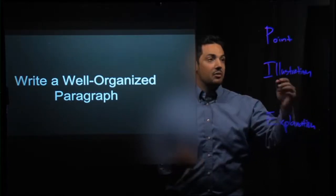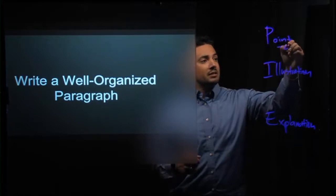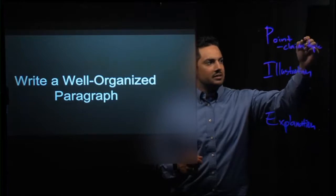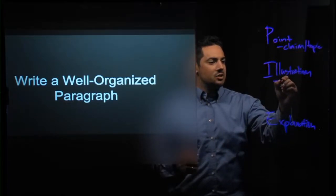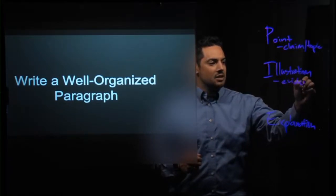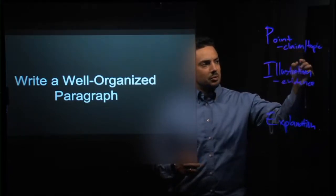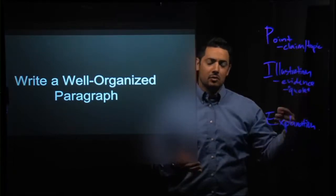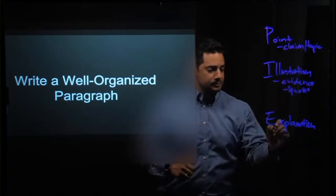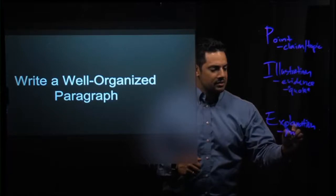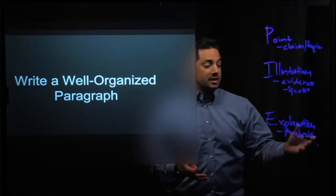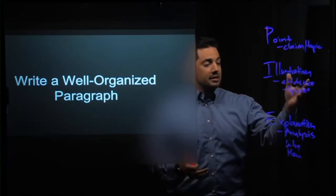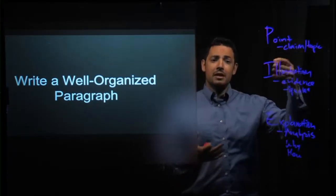Now, what these all refer to: with our point, we're thinking about what is our central claim or even our topic sentence. That's how we traditionally think about it. Illustration then is our evidence. What evidence is there to support our claim? And we often see this in terms of what quote might be integrated to help demonstrate the point. And our explanation then is our analysis. And our analysis then says, how and why does our evidence support our claim as we say it does?